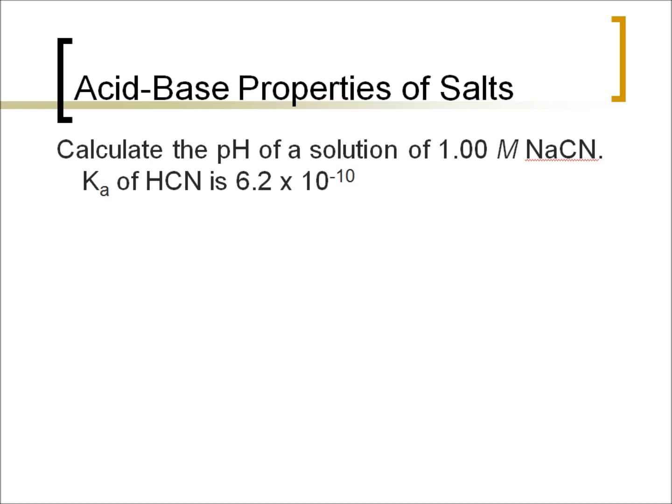Okay, so let's see how well you did. First off, we have to make sure we identify it. Na comes from a strong base. CN comes from a weak acid, roughly we can say HCN. So HCN is a weak acid, conjugate base of a weak acid. So that's really what's going to be affecting the pH is this one.